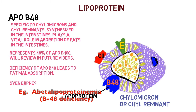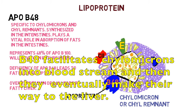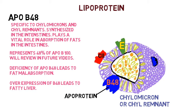A deficiency of apoprotein B48 leads to fat malabsorption, and overexpression of B48 in the intestines leads to fatty liver. ApoB48 sits in the intestines, grabs fat molecules, and facilitates uptake of chylomicrons into the liver — so too much B48 causes fatty liver, and too little causes fat malabsorption.